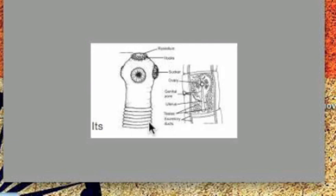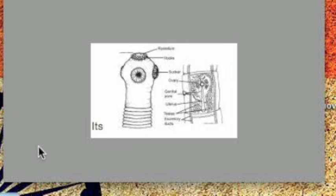The life cycle of a dog tapeworm begins when an egg is passed in a dog's feces. A flea eats the egg, and it develops into a larva within the flea's body. The tapeworm then infects another dog when that dog accidentally eats the infected flea while licking its fur. The tapeworm develops into an adult within the dog's intestine, and the cycle begins again. This is just one example of the many complex life cycles found among tapeworm species.